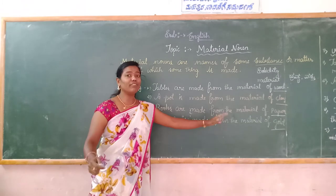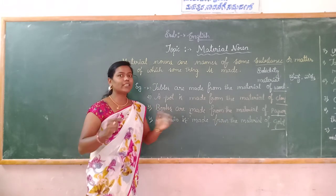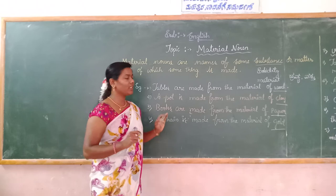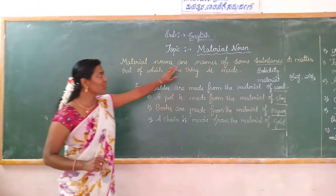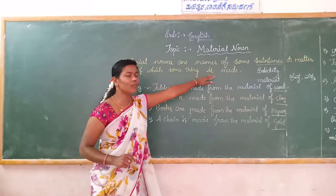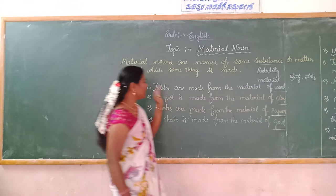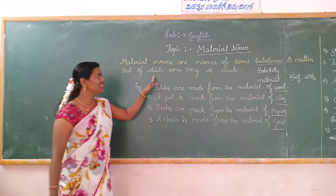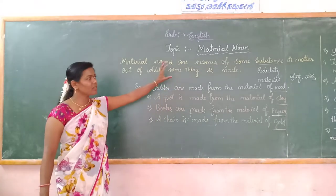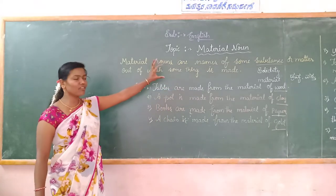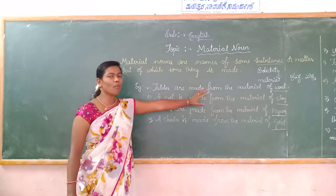Which thing do you use to make something? It is called a material noun. Material noun means names of some substance or matter out of which something is made. Substance is the new word — it means solidity of matter.